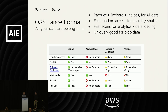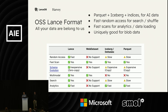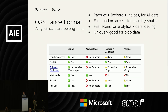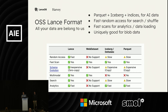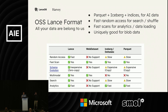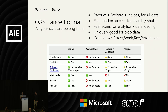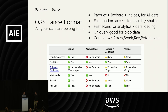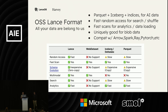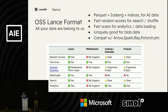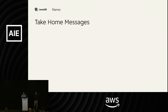You can think of Lance format as parquet plus iceberg plus secondary indices, but for AI data. It gives you fast random access — good for search and shuffle — and fast scans — good for analytics, data loading, and training. It's uniquely good for storing blob data, or more importantly a mix of large blob data and small scalar data. By using Apache Arrow as the main interface, Lance format is already compatible with your current data lake and lakehouse tools: you can use Spark and Ray to write large amounts of Lance data in a distributed fashion, use PyTorch to load data for training or fine-tuning, and query it using pandas or polars.